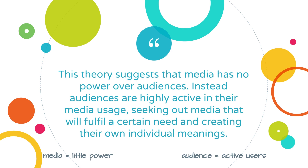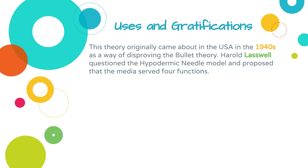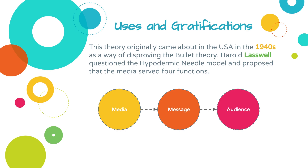The Uses and Gratifications Theory originally came about in the United States in the 1940s as a knee-jerk reaction against the Bullet Theory. Harold Laswell questioned the Hypodermic Needle Model and then went on to propose four functions of the media. Laswell looked at the Hypodermic Needle model — where the media passes a message directly to the audience — and started to formulate questions around it.